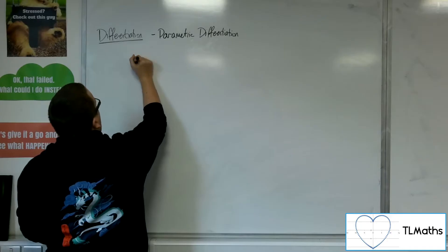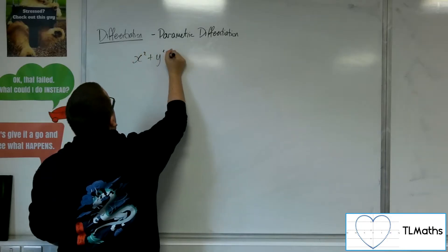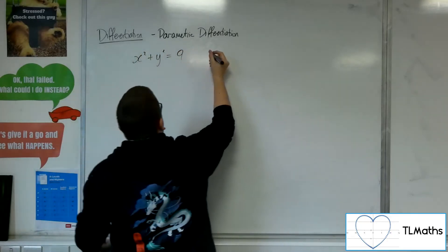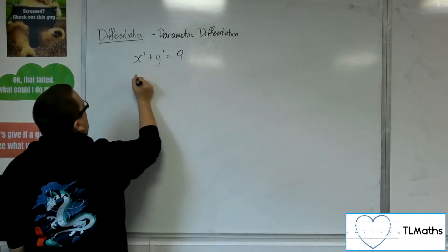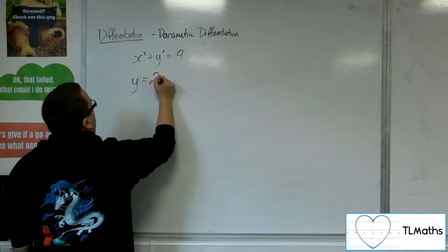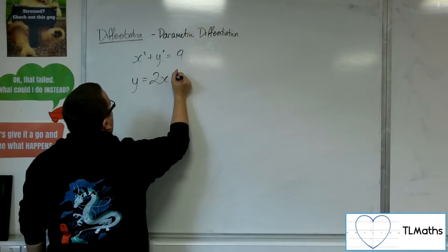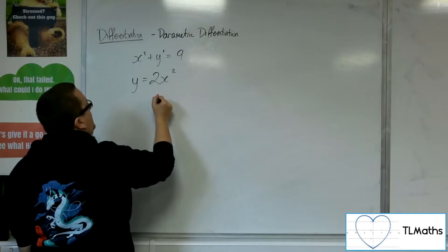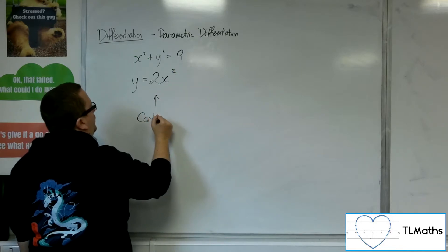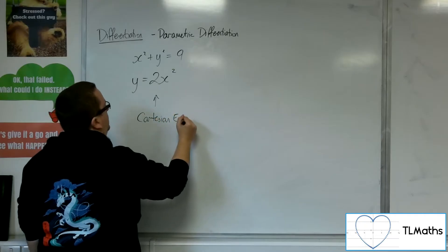So, for example, x squared plus y squared equals 9, or y equals 2x squared, or something like that. These are Cartesian equations.